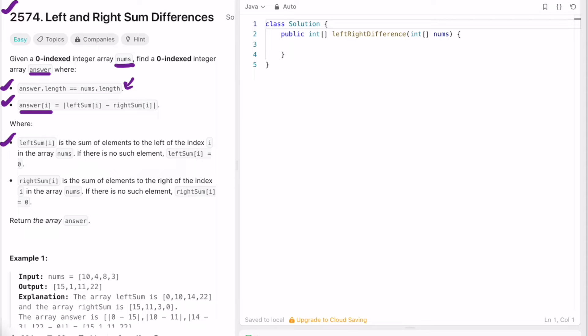And right sum similarly is the sum of all elements to the right of the index in the array nums. If there is no such element, that right sum for that element should be zero. Finally we return our answer, which is an array.